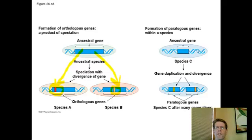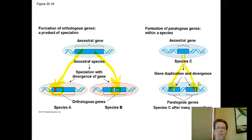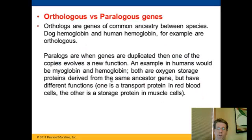The human ancestral gene for an oxygen-carrying molecule gave rise over time to both hemoglobin and myoglobin — that's the paralogous relationship. So understand the difference between paralogous genes (duplication within a species) and orthologous genes (same gene separated by a speciation event). These are terms you should really know for Chapter 26.